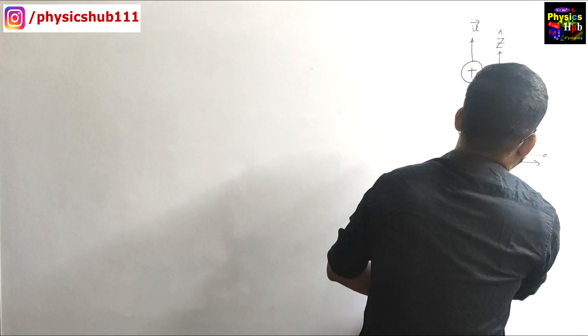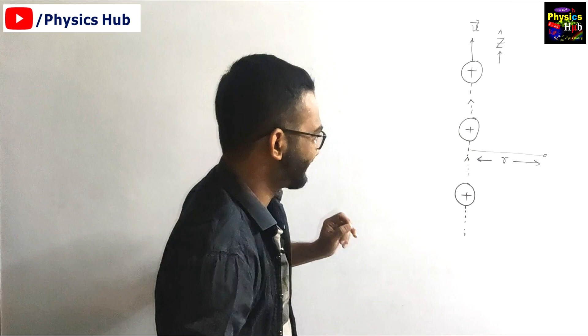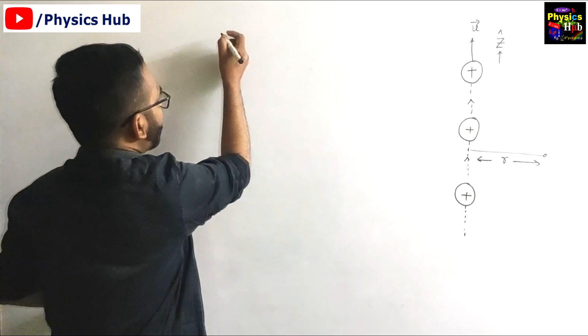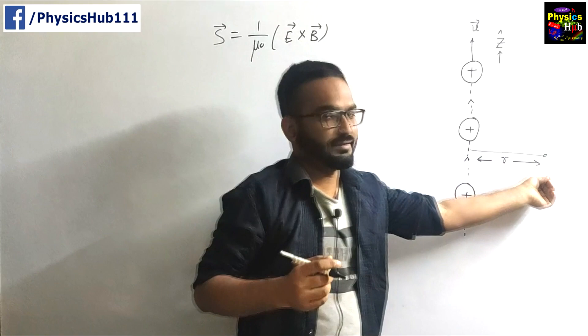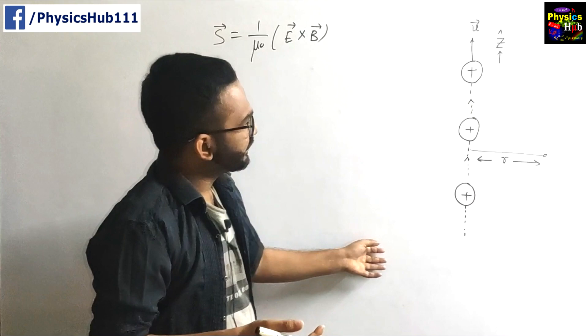How can you find out the Poynting vector at this point? You know the formula of Poynting vector is given by 1 by mu naught into E cross B. So we have to find out the value of the electric field and the magnetic field at this particular point. And before that we need to find out the current.